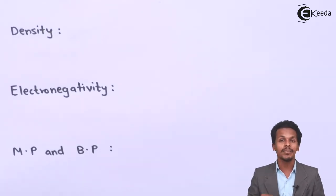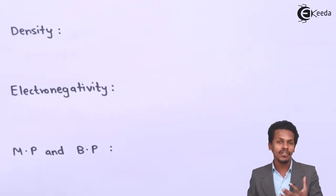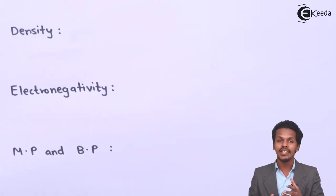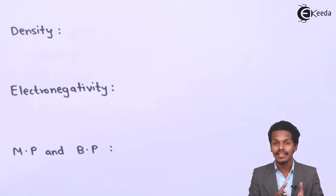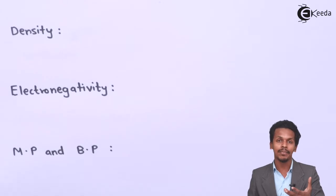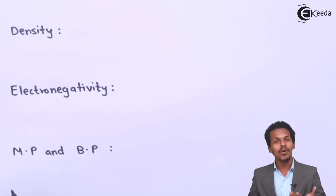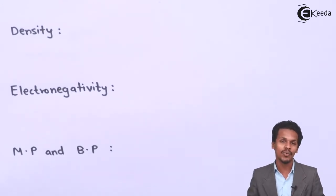If we talk about tellurium and polonium, polonium has lesser Van der Waals forces, and that is the reason its melting point and boiling point are comparatively less than those of tellurium. So tellurium has a higher melting and boiling point compared to polonium.